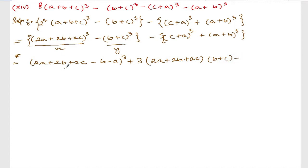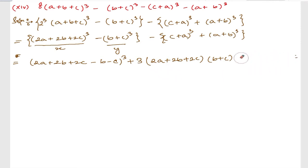Continuing: plus 3xy into (x plus y), so it is (2a plus 2b plus 2c) minus (b plus c). That gives us a cube plus 3xy. Then (a minus b) — fine. This is for the first portion.